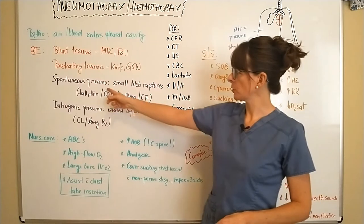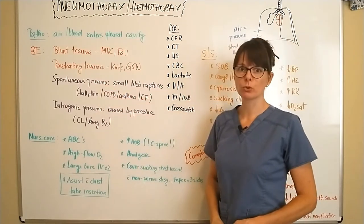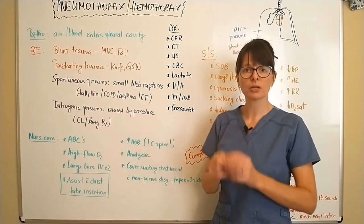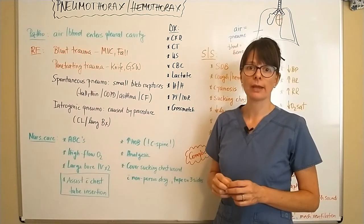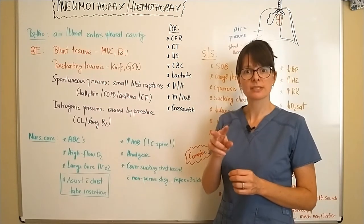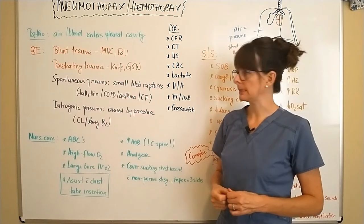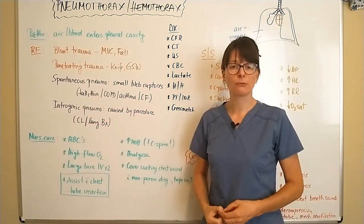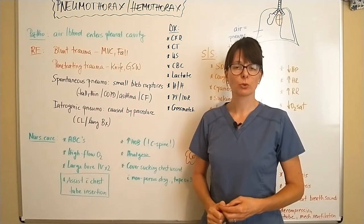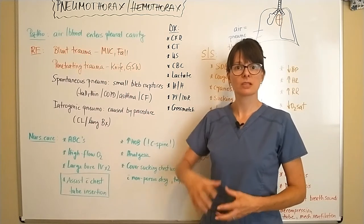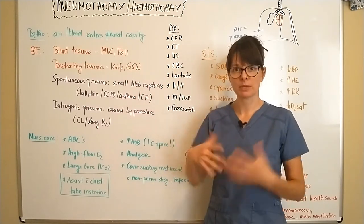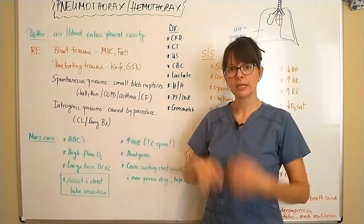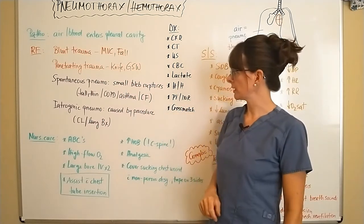We can also have the occurrence of a spontaneous pneumothorax, which basically means that a small bleb — a small part of the alveoli — ruptures and air escapes into the pleural cavity. Tall, thin people are at risk for a spontaneous pneumothorax because of their physical makeup and that tall, thin thoracic cavity.